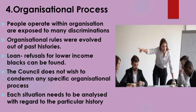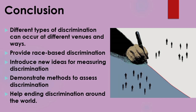Nonetheless, an organization has been found guilty of intentional discrimination for failing to compensate for the unconscious, automatic discrimination of its employees. To conclude, these different types of discrimination can occur at different venues and in different ways. These theories provide insight into the effects of race-based discrimination and introduce new ideas for those engaged in measuring discrimination. They also demonstrate the methods used to assess discrimination within particular domains and help in ending discrimination around the world.